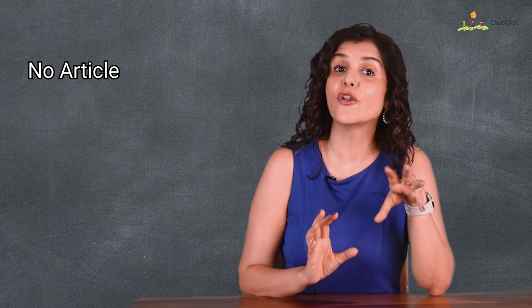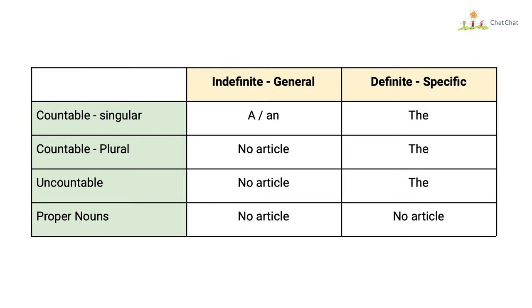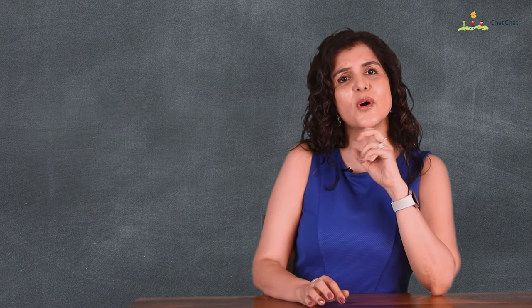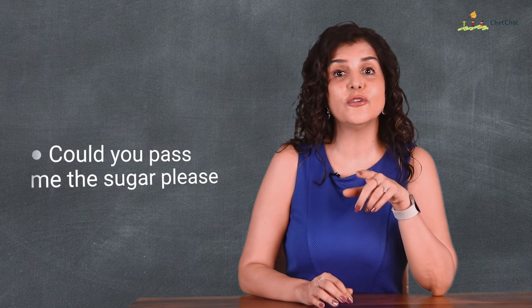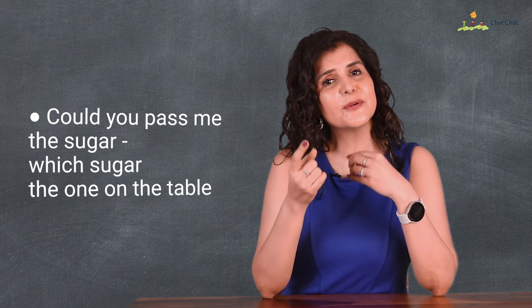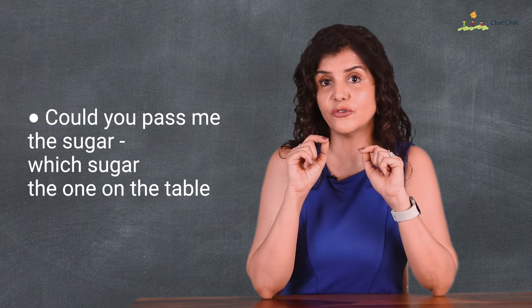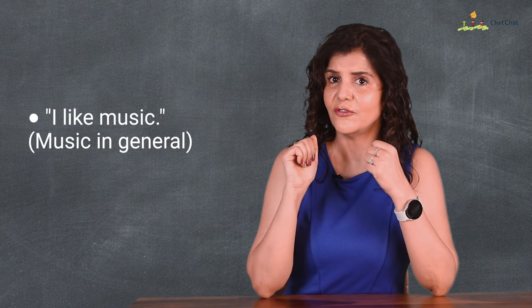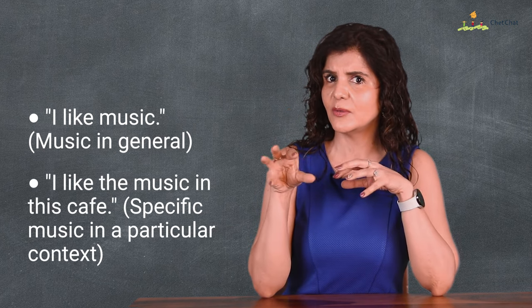Now let's look at cases where no article is used. Articles are not used before names of general substances, concepts, and uncountable nouns in a general sense. The difference: sugar is bad for your teeth — no article, general sense. Could you pass me the sugar, please? — specific sugar on the table. When used in a general sense, articles are often omitted: honesty is the best policy; gold is a precious metal. But in a particular sense, the is used: I can't forget the kindness with which he treated me. Compare: I like music — music in general; I like the music in this cafe — specific music in context.